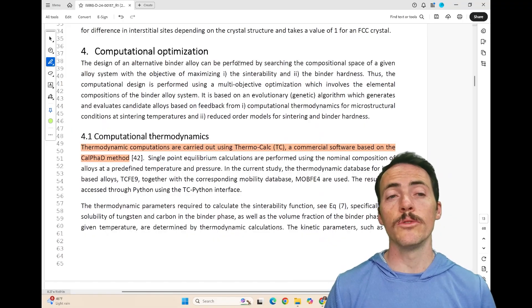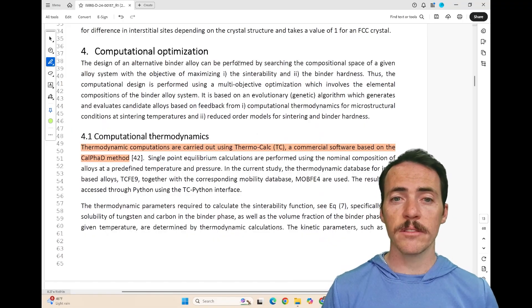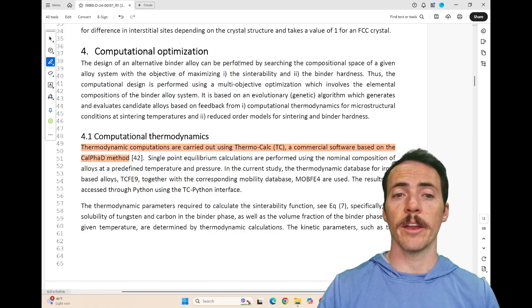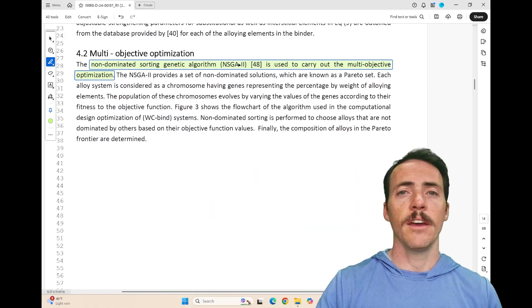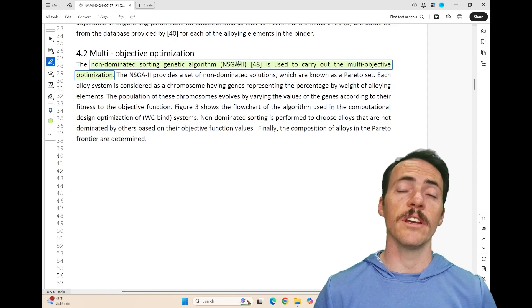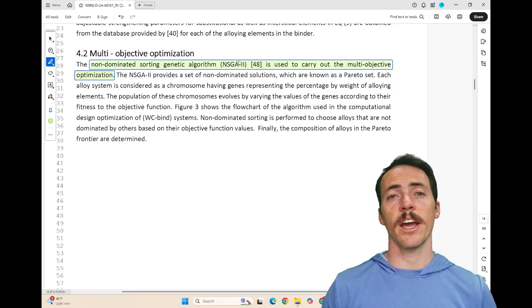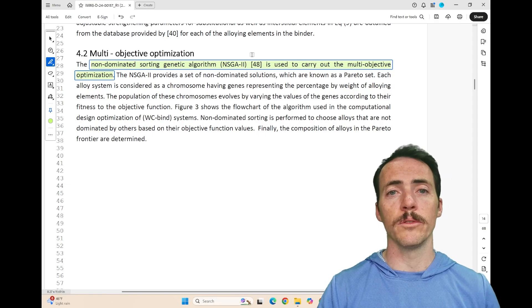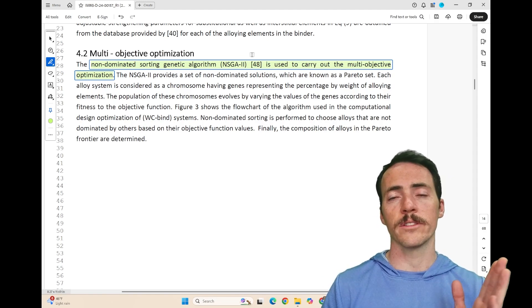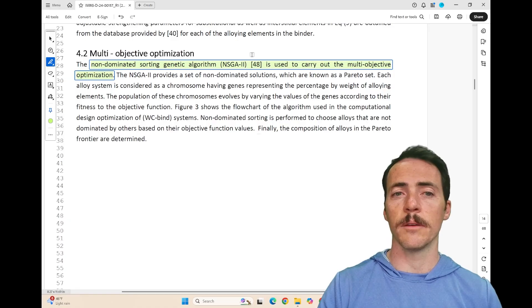Again, the approaches used are computational thermodynamics. So they use the thermocalc software, which is based on the Calfad method, calculated phase diagrams. And since they're considering multiple objectives, they're going to tackle that by using the non-dominated sorting genetic algorithm, very popular genetic algorithm used in lots of fields, the NSGA2. This is going to allow them to consider both processing and properties at the same time.